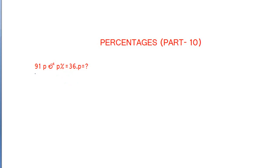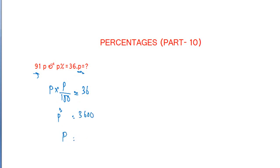In the percentage, I will teach you. 91% is equal to 3600. P value is equal to 3600. P by P percentage is equal to 3600. M is equal to 3600. 60 square is equal to 3600.